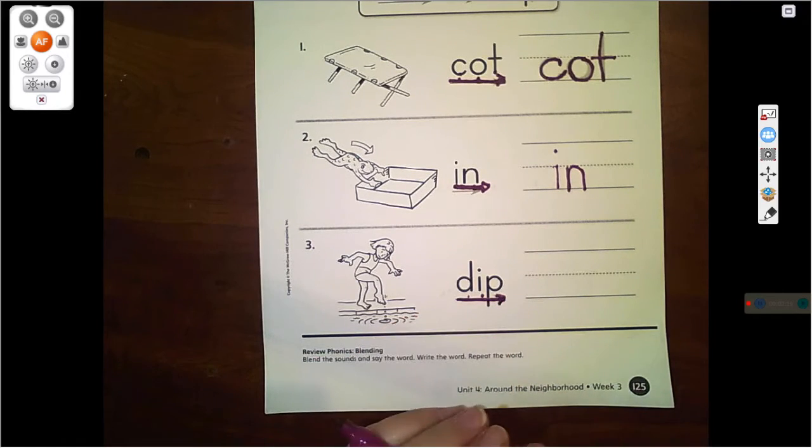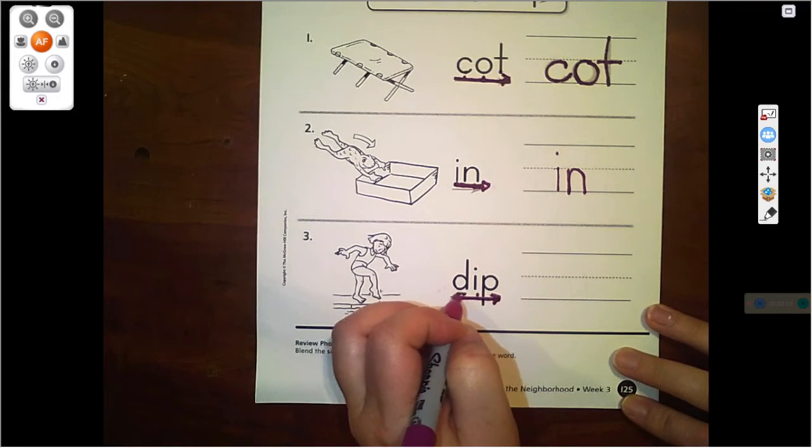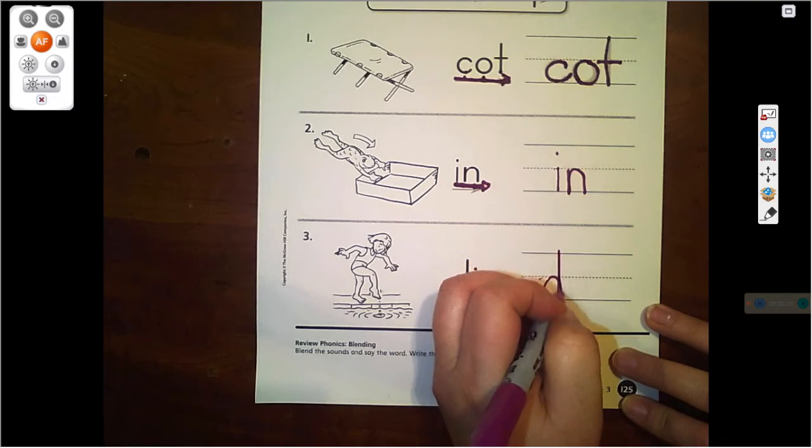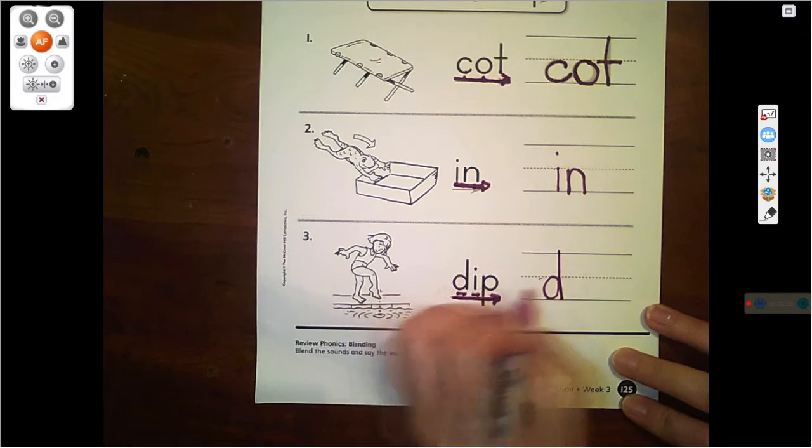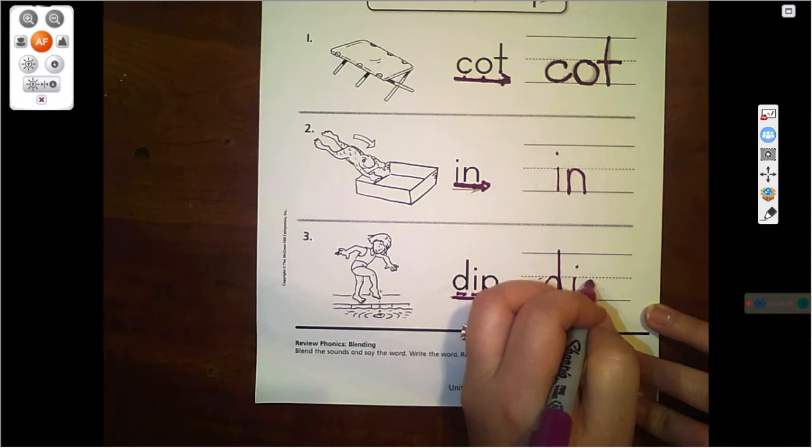She has dipped her toe in the water. It means just to touch it in a little bit. So let's write dip. First comes the D, then comes the I, then comes the P. Dip.